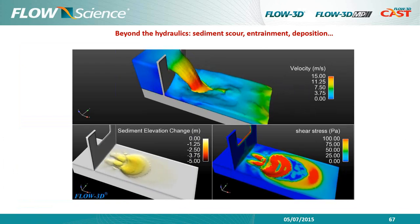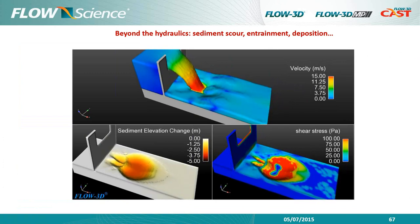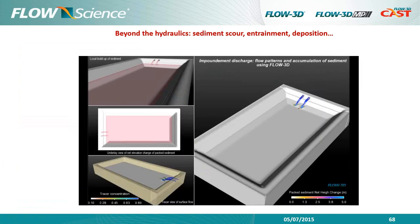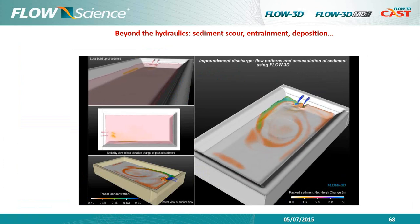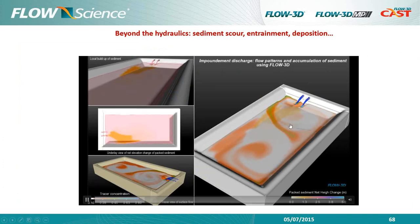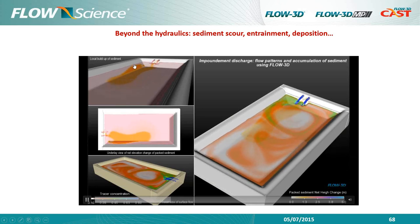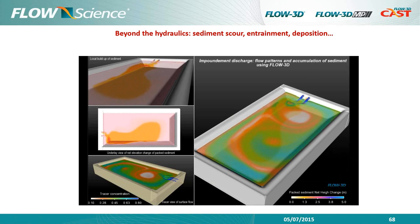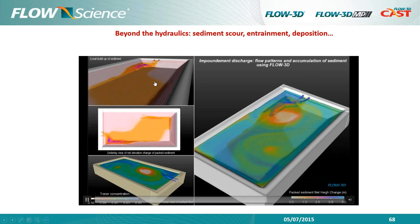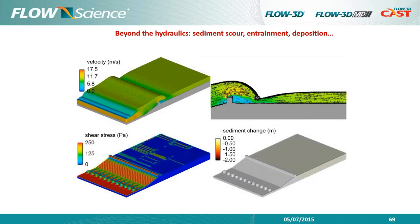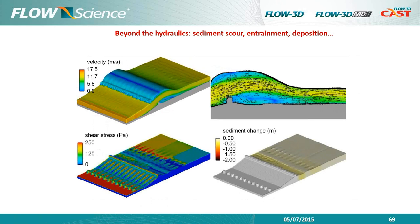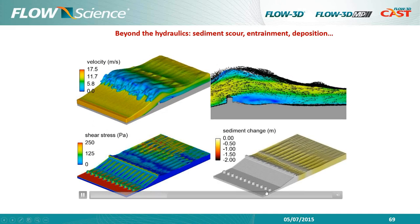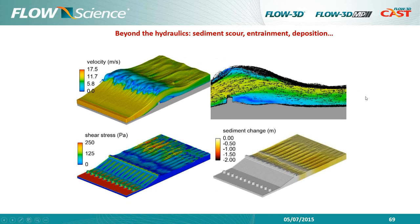Sediment scour is a real strength of FLOW-3D — entrainment, deposition, and resettling downstream. In this generic example of sediment-laden water entering a pond, you can see sediment accumulating in the corner. Over time the sediment itself begins to affect the hydraulics, feeding back into the flow behavior. A stilling basin sediment scour example also shows the sediment change patterns for that case.